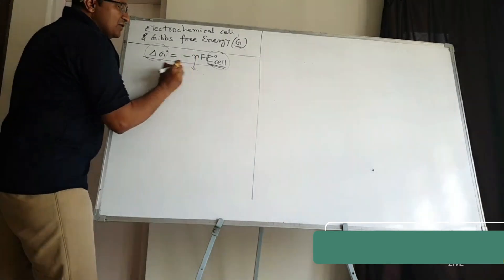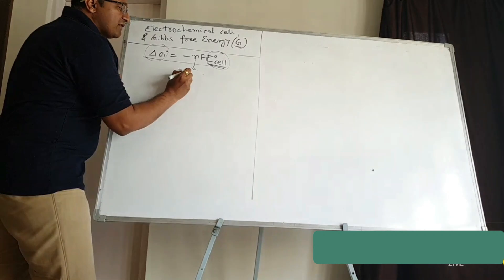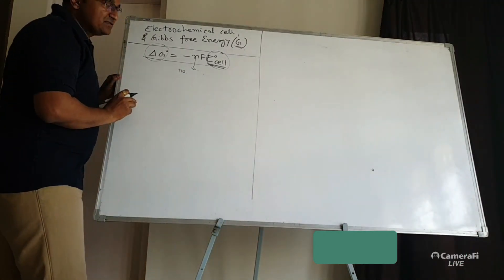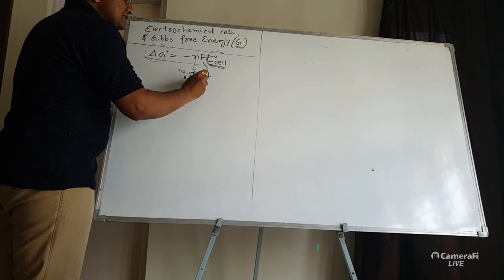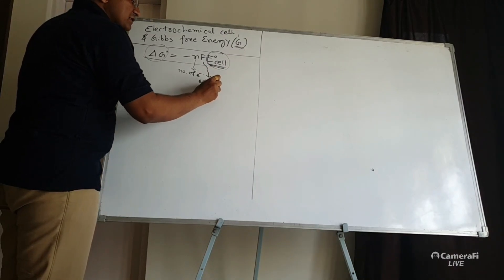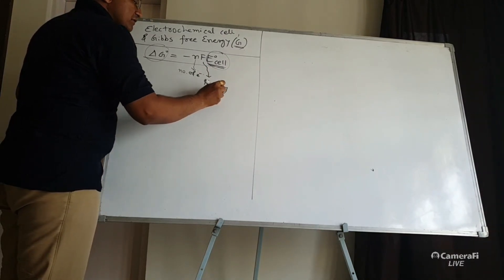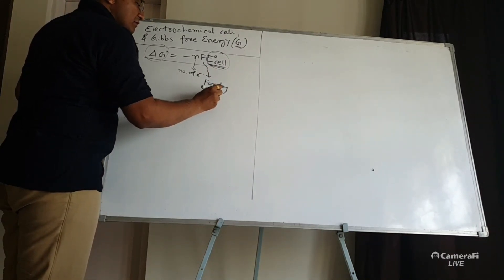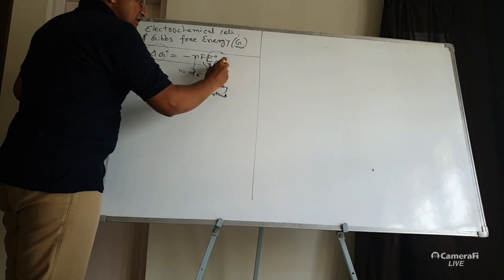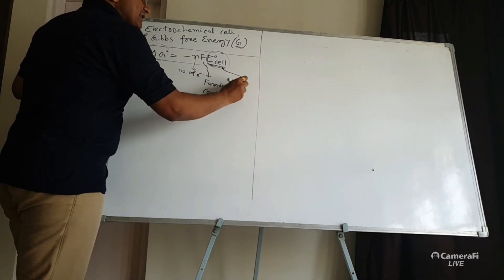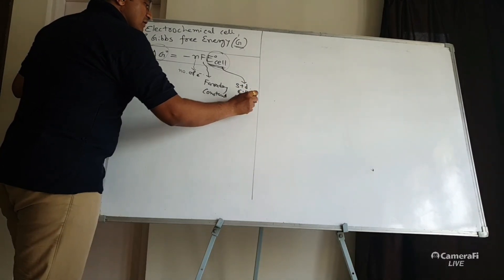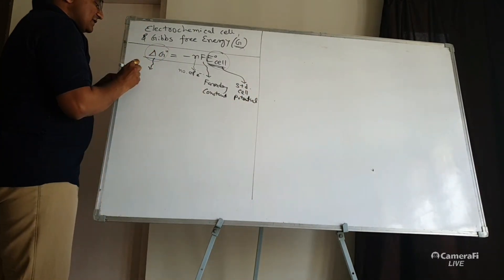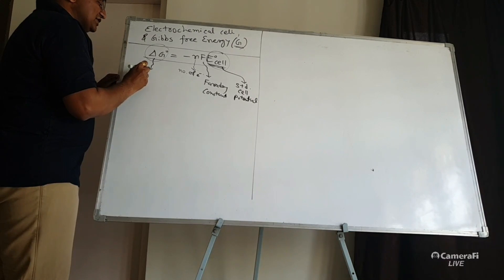Here N is the number of electrons transferred during the cell reaction. F is the Faraday constant, with a value of 96487 Coulombs, simplified to 96500 Coulombs. E⁰cell is the standard cell potential, and ΔG⁰ is the Gibbs free energy change.